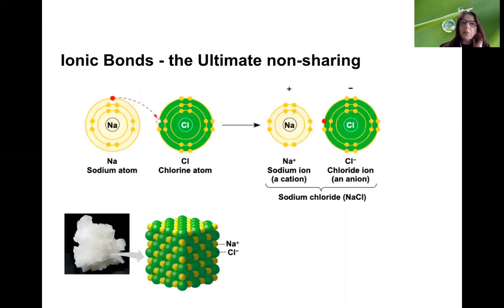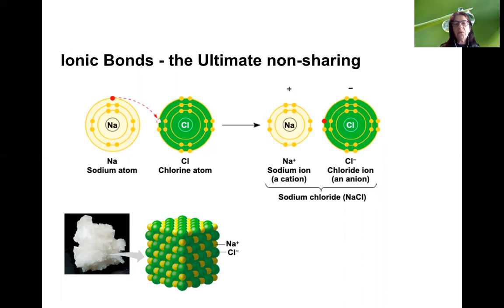Ionic bonds are really the ultimate non-sharing. Here I'm showing a model of sodium chloride, or table salt, which is an ionic compound. The sodium atom contains a single electron in its outer valence shell, which can hold eight — so sodium is seven short. The chlorine atom contains seven electrons in its outer valence shell, so it's just missing one to have a completely filled outer shell. For this reason, chlorine will actually pull or steal an electron from sodium.